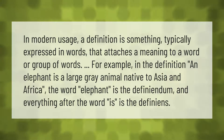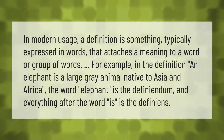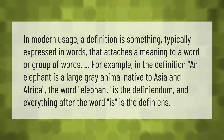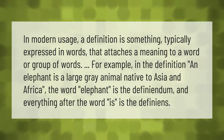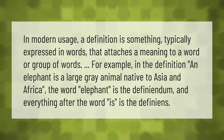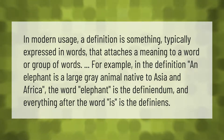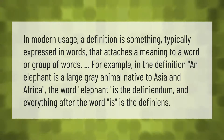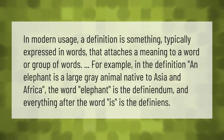In modern usage, a definition is something typically expressed in words that attaches a meaning to a word or group of words. For example, in the definition 'an elephant is a large gray animal native to Asia and Africa,' the word 'elephant' is the definiendum and everything after the word 'is' is the definians.